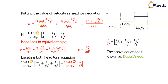Substituting the velocity values into the head loss equation: H = 4F1·L1·(4Q/D1²)²/(2g) + ... Squaring gives 16Q²/π²·D1⁴, and combined with the D1 in the denominator gives D1⁵. Taking common terms, H = (4×16×F×Q²)/(π²×2g) × [L1/D1⁵ + L2/D2⁵ + L3/D3⁵]. This is the head loss equation for the compound pipe.